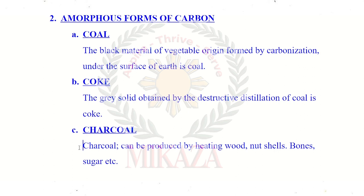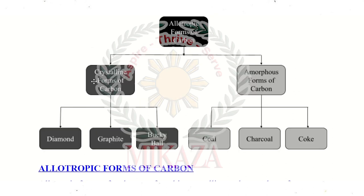Charcoal can be produced by heating wood, nutshells, bones, and sugar. When wood, plants, bones, or sugar are heated in different ways, a black colored material is produced — that is known as charcoal. So we have six allotropic forms of carbon: crystalline — diamond, graphite, and buckyballs; amorphous — coal, charcoal, and coke.